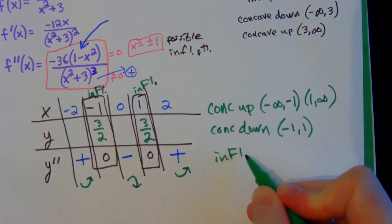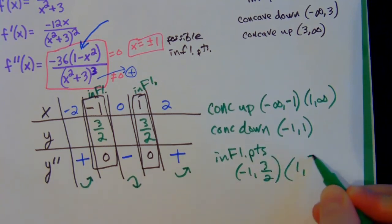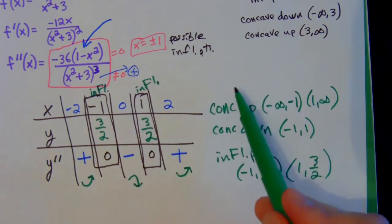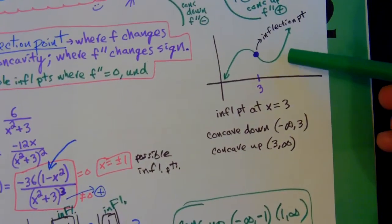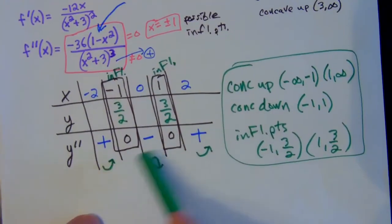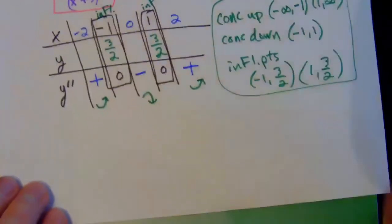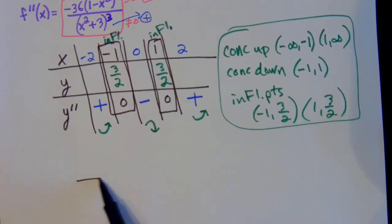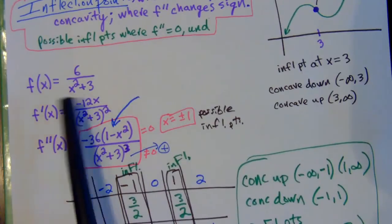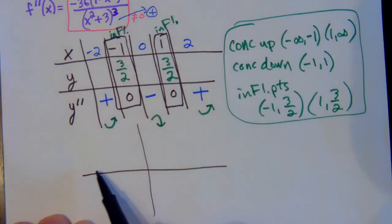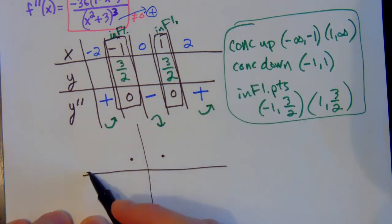We have two inflection points — label those on the chart. You don't need to graph anything in this section except for the practice problems. For the rest, just use the second derivative to find that information. Make sure you understand the graphical connection — we'll combine everything with increasing/decreasing intervals in the future.